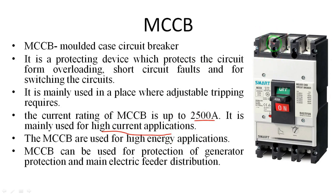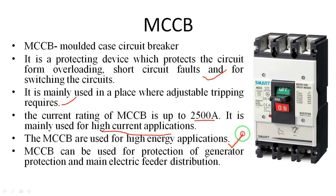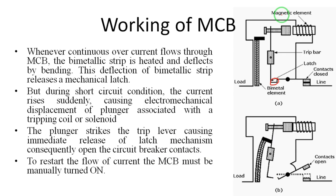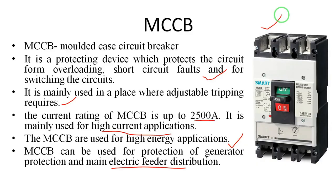MCCB is a protecting device which protects the circuit from overloading, short circuit faults, and for switching circuits — the same working function as MCB. It is mainly used where adjustable tripping is required, for high-current purposes. MCCB is also used for high-energy applications and to protect generators and main electrical distribution systems. It is used in substations and distribution systems. Both MCB and MCCB have the same working operation, but different current ratings.